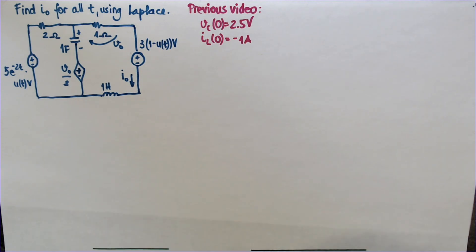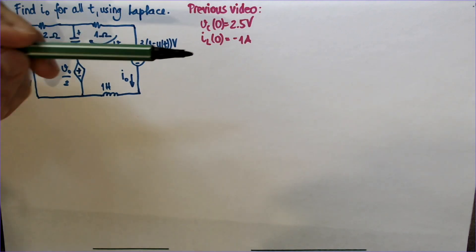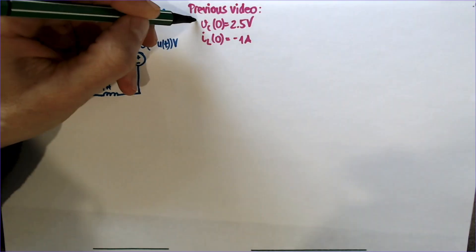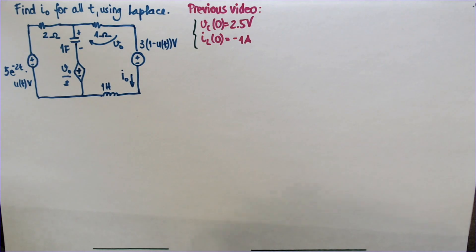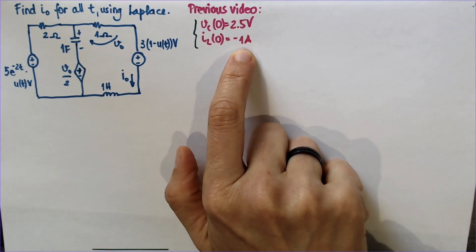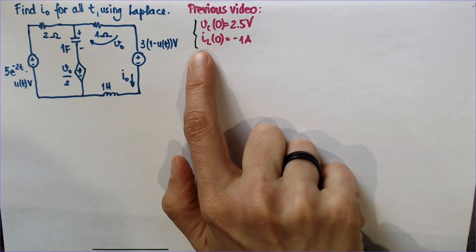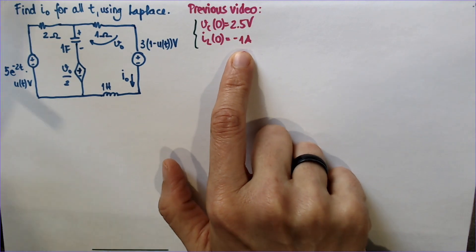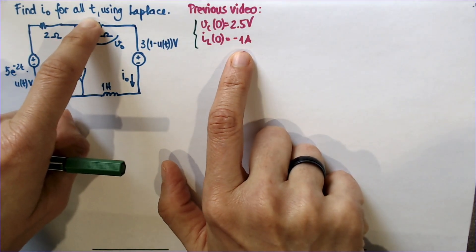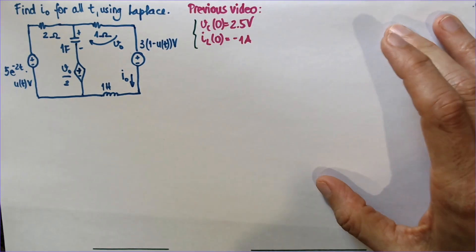This is the second video of this circuit. The first one we found these two initial conditions. We also found that for t tending to infinity the current is going to be zero. So I have a feeling for the current value for all time before zero and for time tending to infinity.